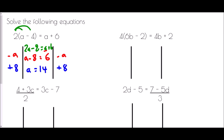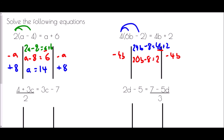Adding 8 to both sides gives a equals 14. With 4 brackets (6b take away 2) equals 4b plus 2, I first expand the bracket, giving 24b take away 8 equals 4b plus 2. I get rid of the smallest amount of b — the 4b — by subtracting 4b from both sides, leaving 20b take away 8 equals 2. I then add 8, so 20b equals 10. Finally dividing by 20, b equals 10 divided by 20, which is one half.